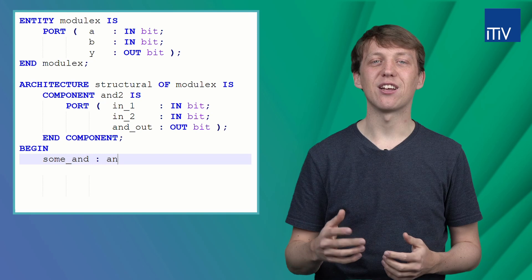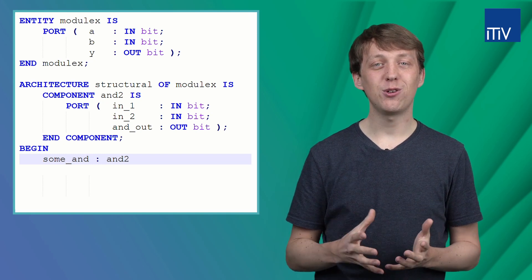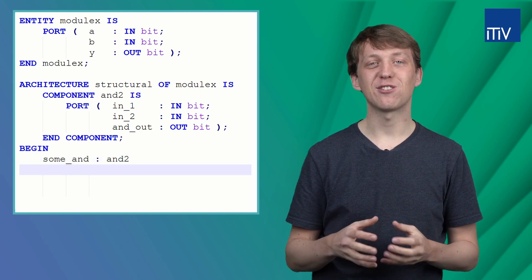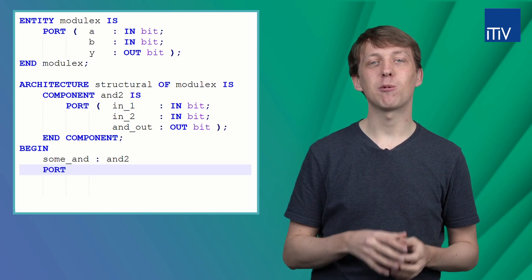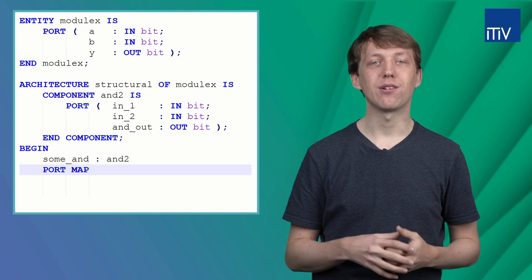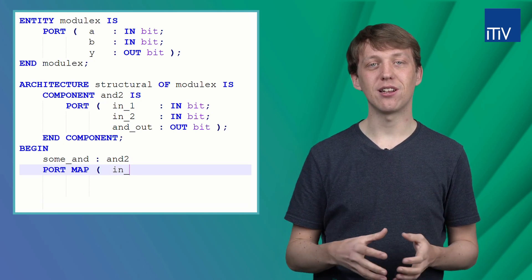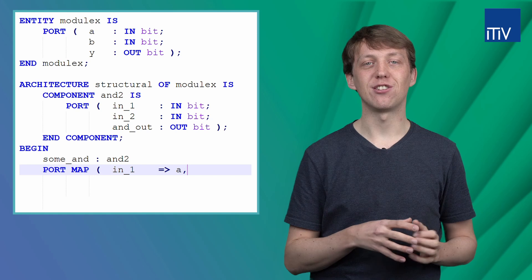Afterwards, we have to map some signals to the ports of the entity. This can be done after using the port MAP keyword and within the parenthesis. Each signal has been mapped to another signal. Therefore, we have to use the assignment statement again.